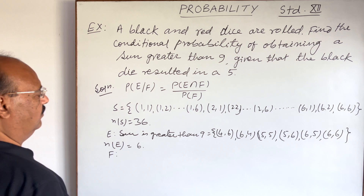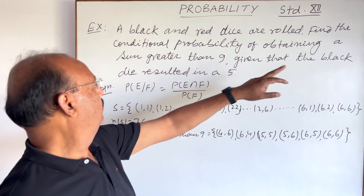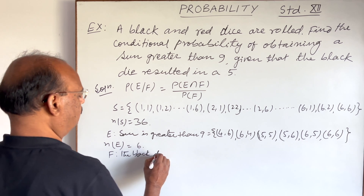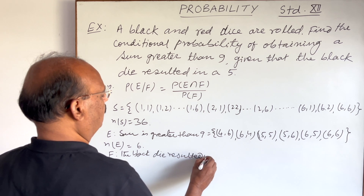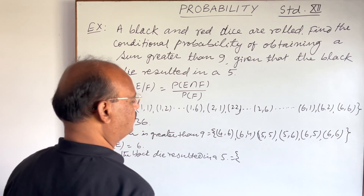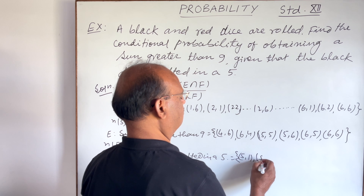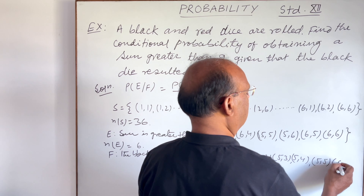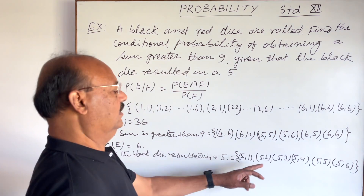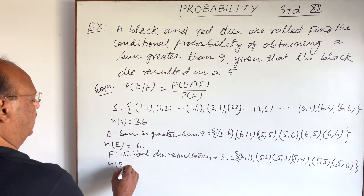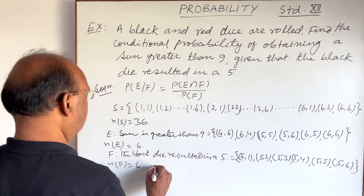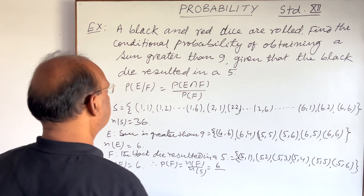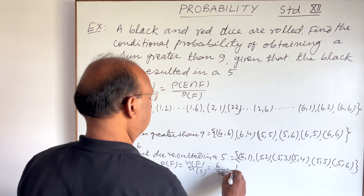Similarly, let event F be: the black die resulted in a 5. The elements of F are: (5,1), (5,2), (5,3), (5,4), (5,5), and (5,6). So there are six elements, and therefore n(F) = 6.